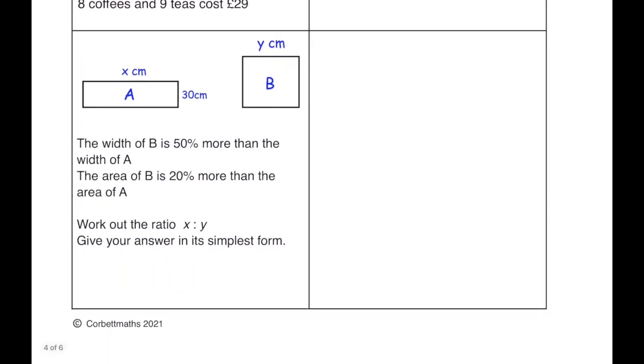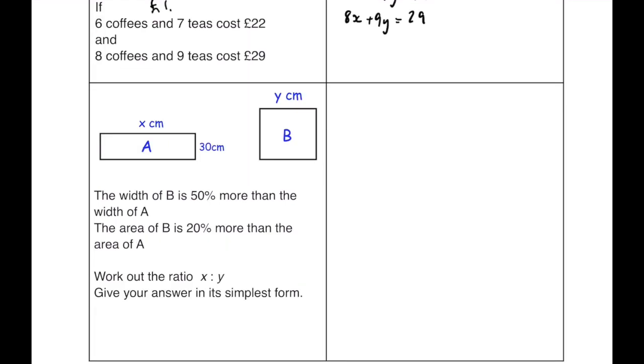And the final question. The width of b is 50% more than the width of a. The area of b is 20% more than the area of a. Work out the ratio x to y. So we know that the width of b is 50% more than the width of a. So that means that this must be 45 because 1.5 times 30. We also know that 30x times by 1.2 is equal to 45y. So putting these together we can say 36x equals 45y. So the ratio of x to y is 45 to 36. Which if we divide by 9 we're going to get 5 to 4.